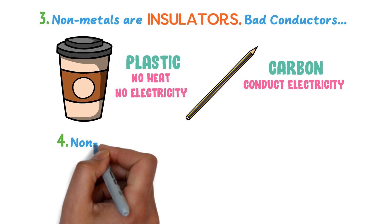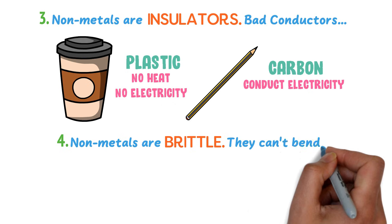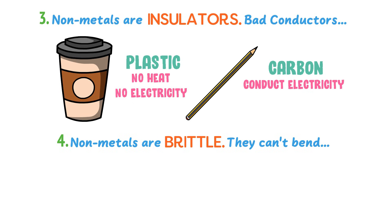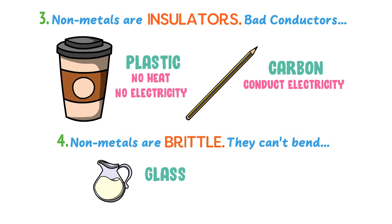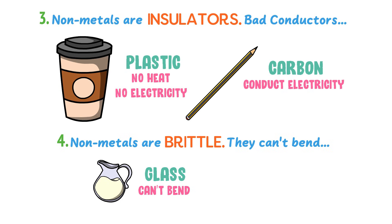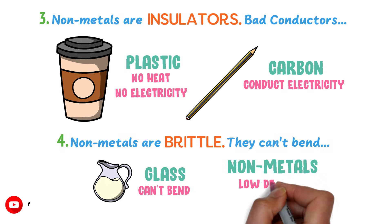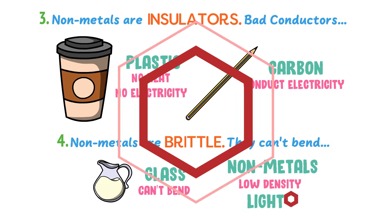Fourthly, non-metals are brittle. It means that non-metals are not easy to bend without breaking. For example, consider glass — you cannot bend glass without breaking it, so we say that non-metals are brittle. Also remember that comparatively, non-metals are less dense; they are usually light and not heavy.